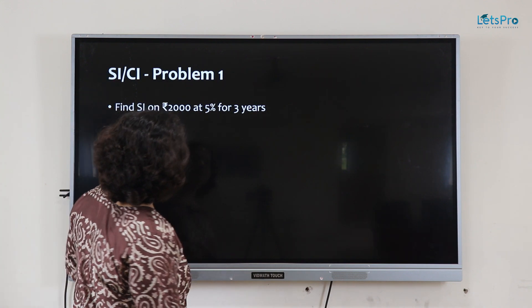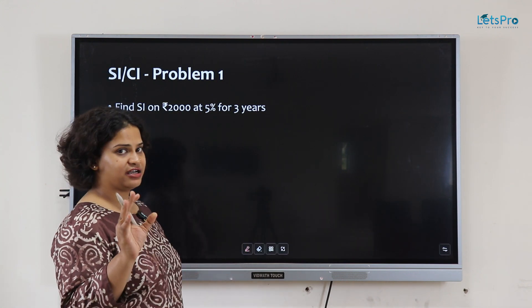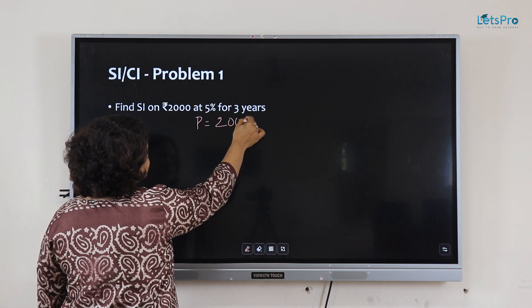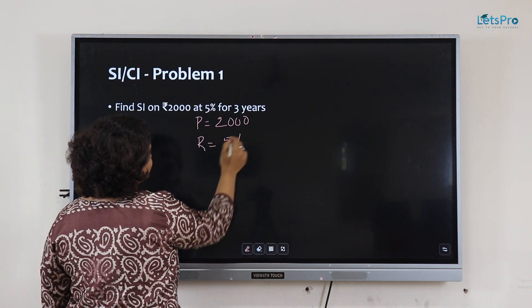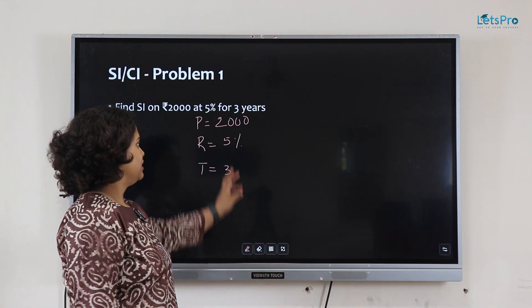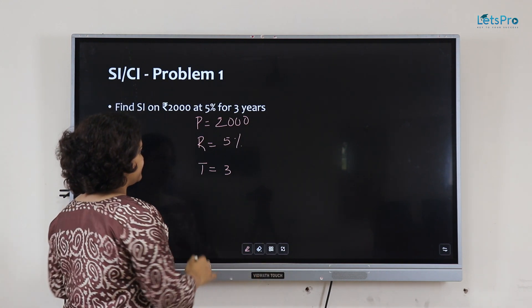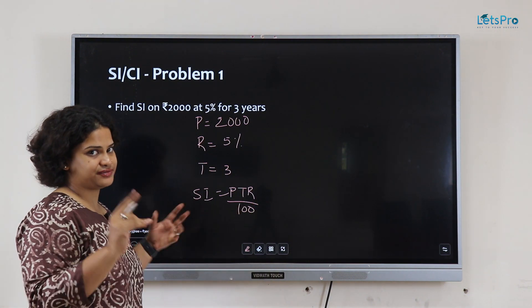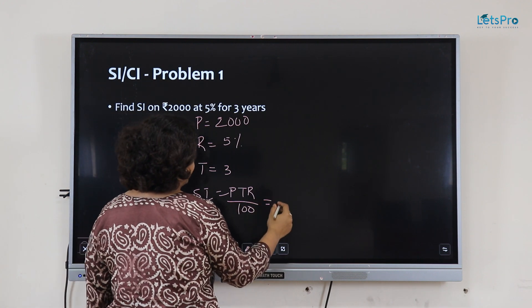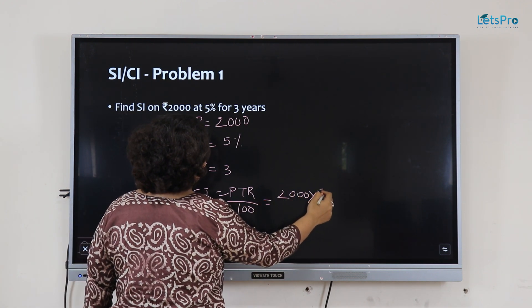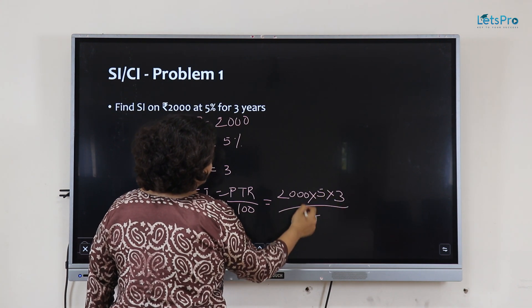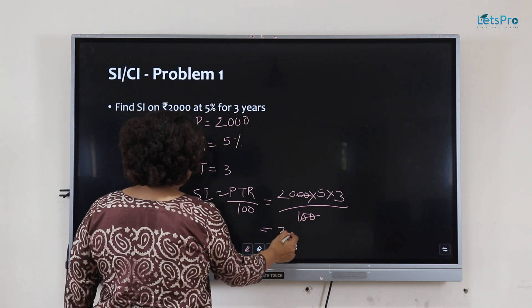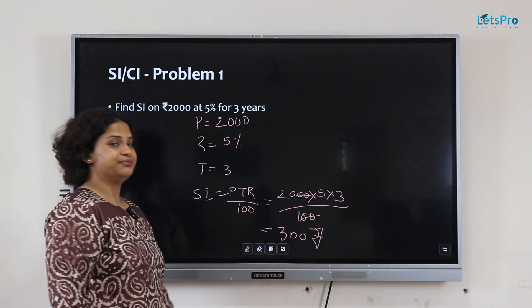First problem: find SI on 2000 at 5% for 3 years. Principal is 2000, rate is 5%, time is 3 years. SI equals PTR by 100, so 2000 into 5 into 3 divided by 100. The zeros cancel, giving 2000 into 5 into 3 divided by 100, which is 6 times 50, so 300 rupees is the simple interest.